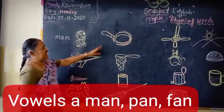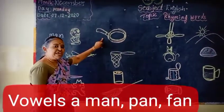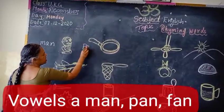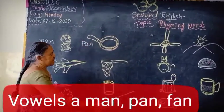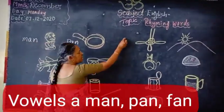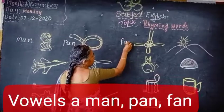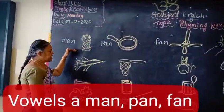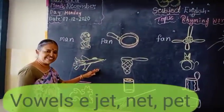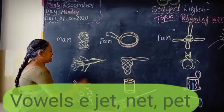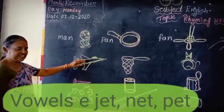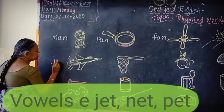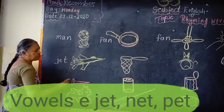A sound. Next: P-A-N, pan. F-A-N, fan. This is the A sound. The next one — see this? This is jet: J-E-T, jet. E sound. N-E-T, net.